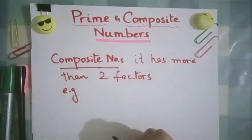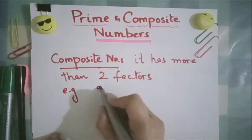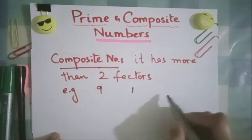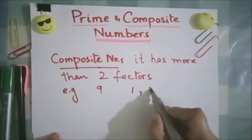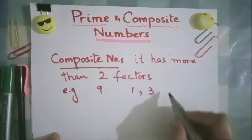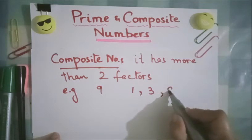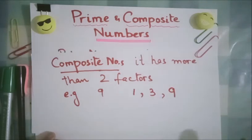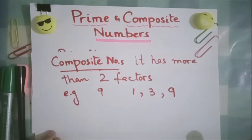I am going to write here number 9. Now 9 is divisible by 1, 9 is divisible by 3 as three threes are 9, and 9 is divisible by the number itself. Every number is divisible by itself and 1.